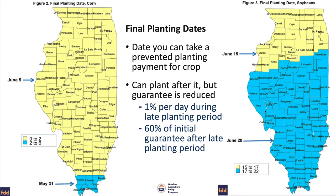The prevent plant dates are: June 5th for corn in most of Illinois, May 31st in southern Illinois, and June 15th and June 20th for soybeans. Once we reach that final plant date, you can take the prevent plant payment. Once you reach that date, it doesn't matter what the conditions are in the field — June 6th, 7th, and 8th can be beautiful conditions, but you don't have to justify not planting after the final plant date.